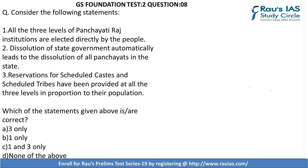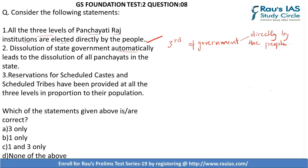Question 8: consider the following statements. First — all three levels of Panchayati Raj institutions are elected directly by the people. This is correct; the Constitution provides that the Panchayat at village, block, and district level will be directly elected by the people. Second — dissolution of the state government automatically leads to dissolution of all Panchayats in the state. We know the Panchayat is the third level of government, elected directly by the people, and functions independently of the state government.